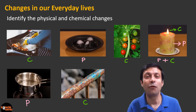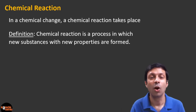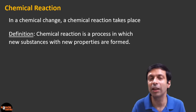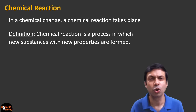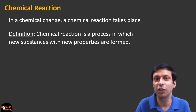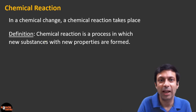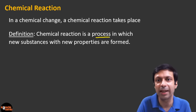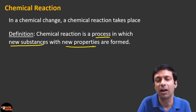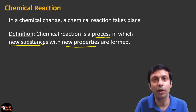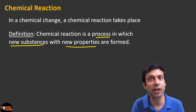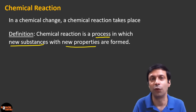In this video, our focus will be on chemical changes. What is a chemical reaction? In a chemical change, a chemical reaction takes place. A chemical reaction is a process in which new substances with new properties are formed. Something new needs to be formed in a chemical reaction, but in a physical change, no new substance is formed.